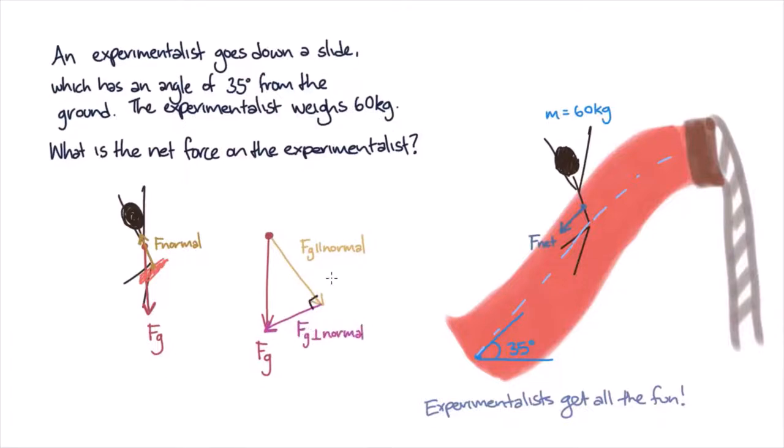Let's use our intuition here. There is no motion or acceleration perpendicular to the ramp, as we have assumed that the experimentalist stays on the slide's surface. So we know that the normal force from the slide cancels out the component of gravity parallel to this normal force, which is perpendicular to the slide's surface. This means that the net force on the experimentalist is entirely the component of gravity perpendicular to the normal force, which is parallel to the slide's surface.